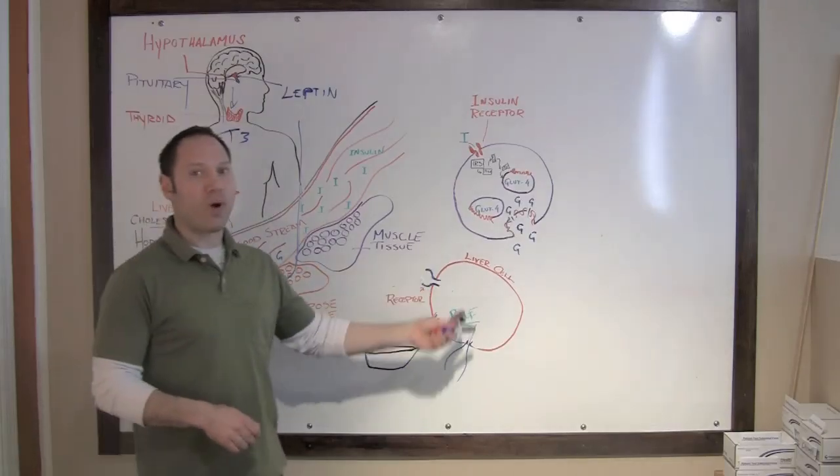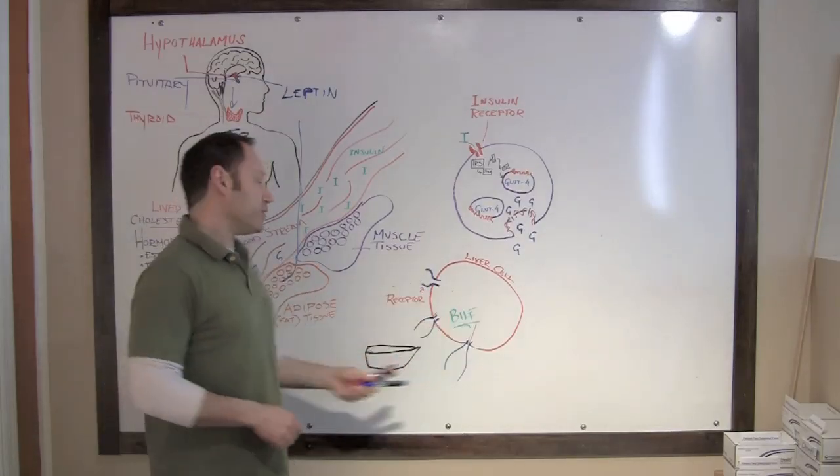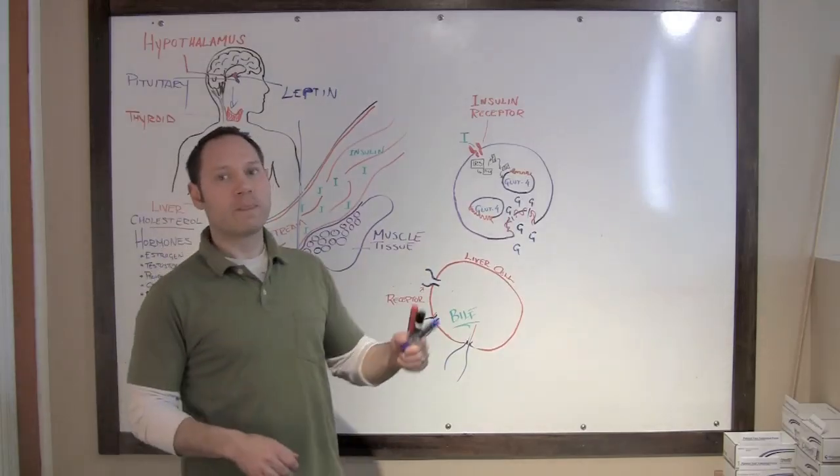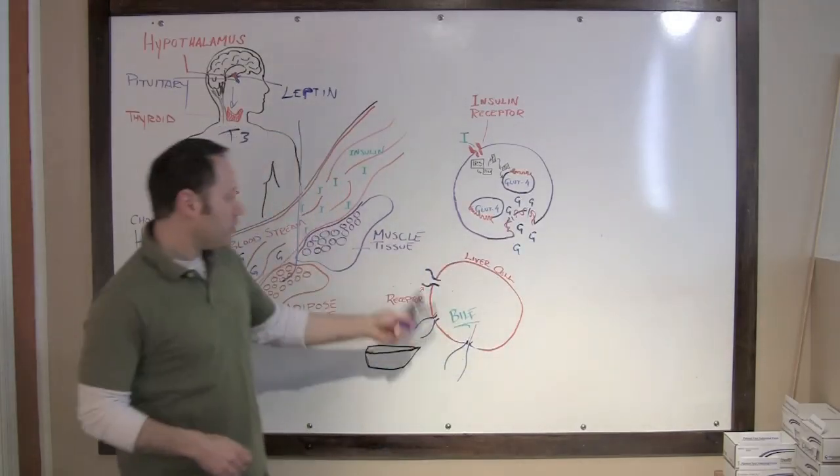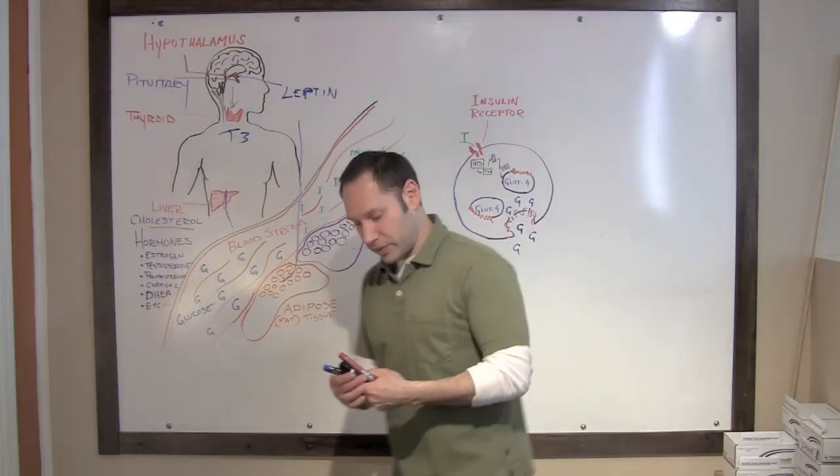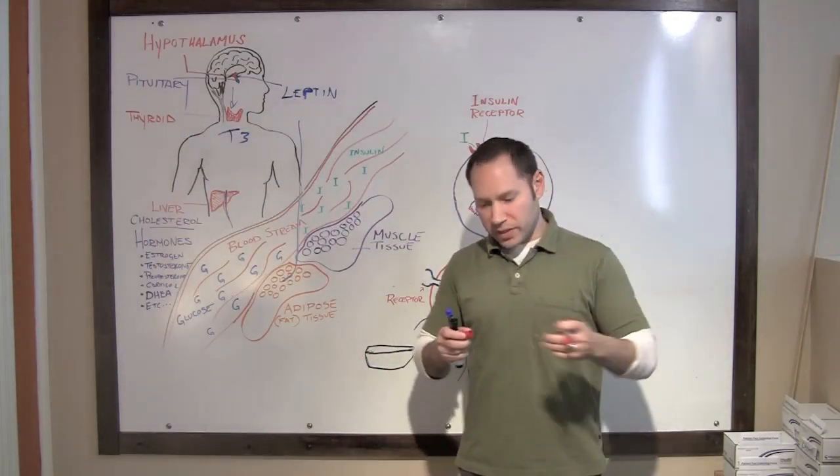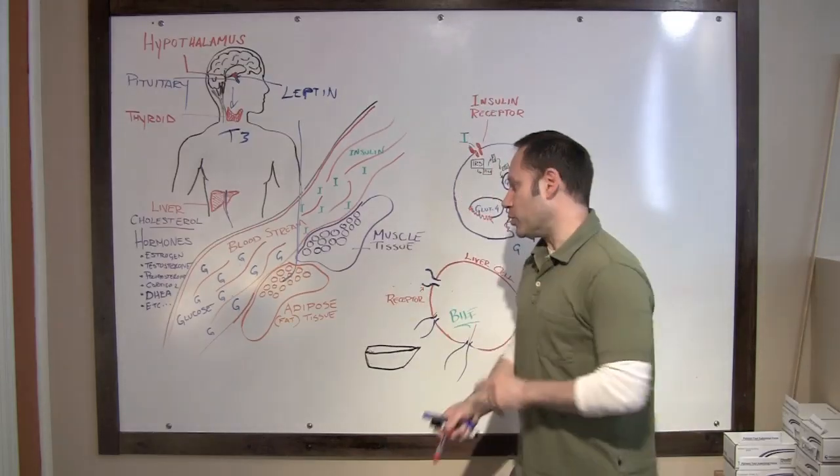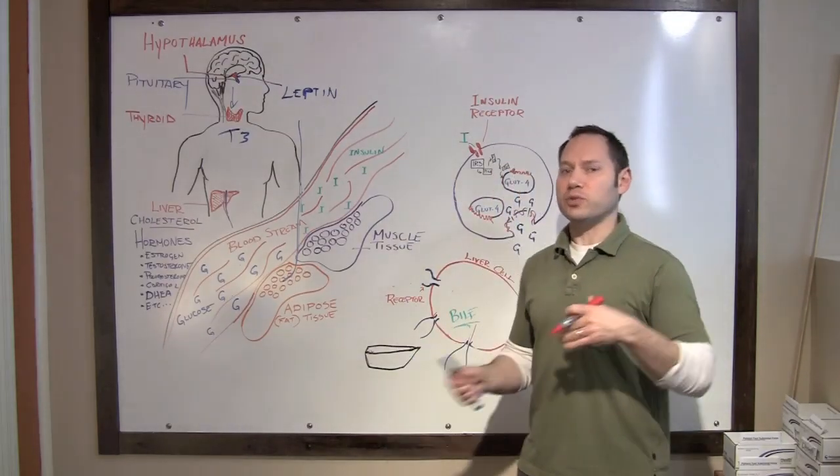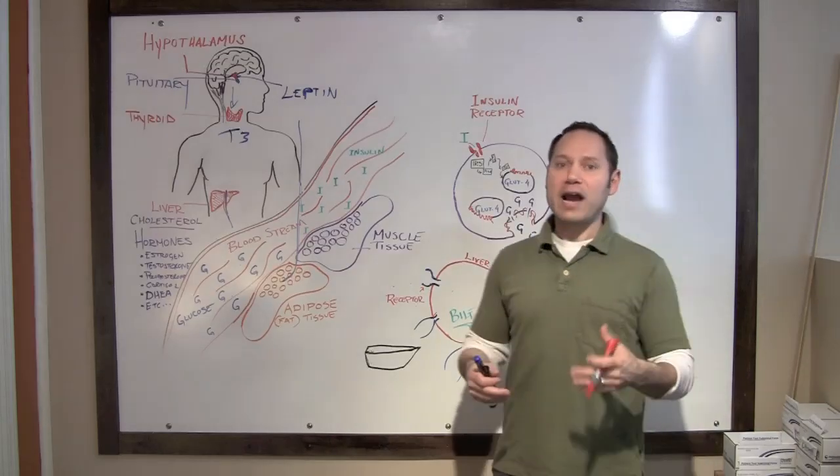One of the things that's required in order to produce bile is cholesterol. So how does cholesterol get from the blood to this cell and then into the cell so it can produce bile? Here's what's interesting. Cholesterol is a fat-soluble substance and your blood is water-based.